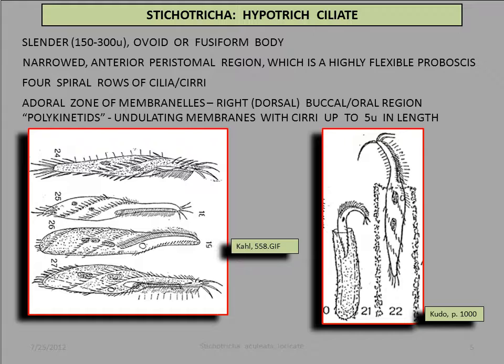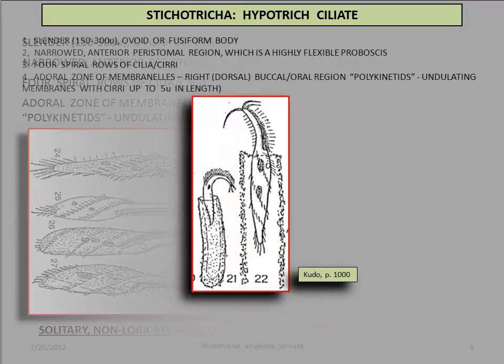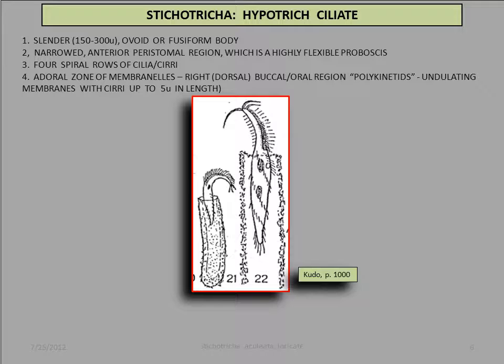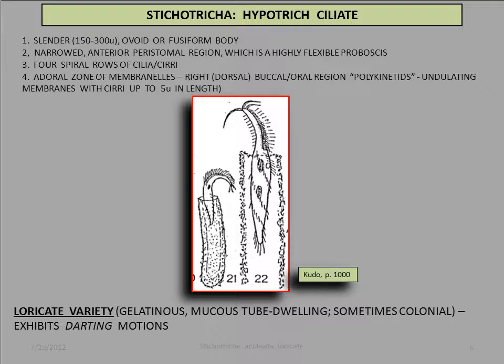Stichotrica may be found free-swimming in the environment in a solitary, non-loricate form, but is more typically found in a loricate form. The lorica is a tubular structure formed from gelatinous mucoid material secreted by the organism itself.